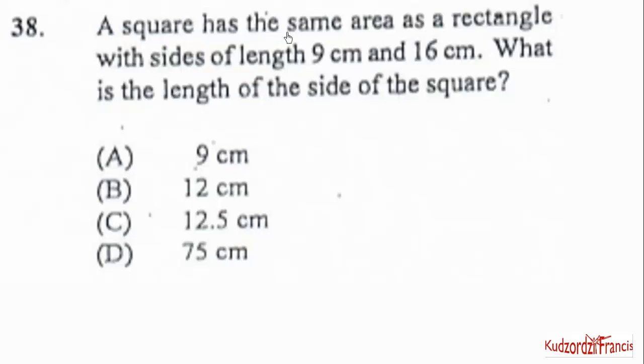A square has the same area as a rectangle with sides of length 9 cm and 16 cm. What is the length of the side of the square? So first we calculate the area of the rectangle, which is 9 by 16. And that will give you 144.